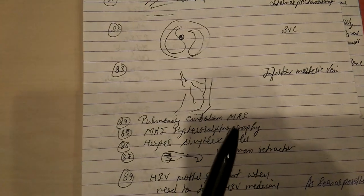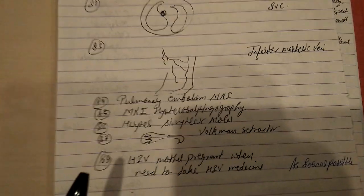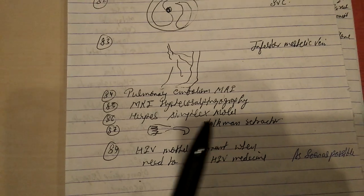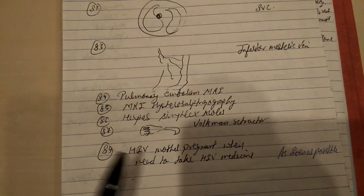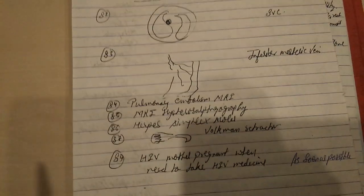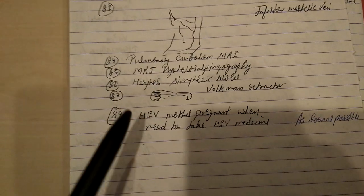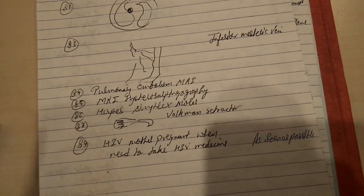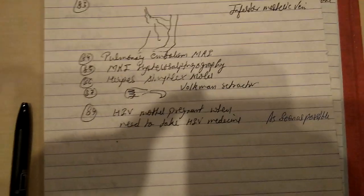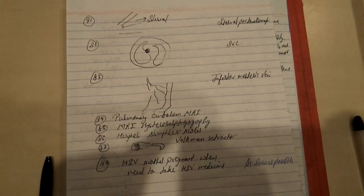You can also see MRI for pulmonary embolism, hysterosalpingography photographs, herpes simplex lesions, and Volkmann retractors. Regarding HIV-positive pregnant mothers — she needs to take HIV medicine as soon as HIV is diagnosed during pregnancy.